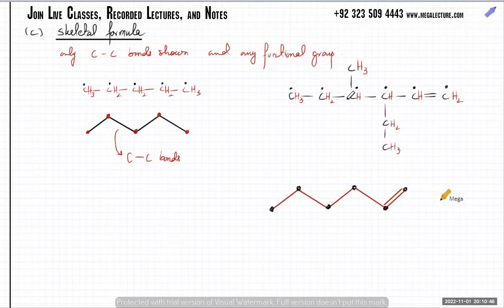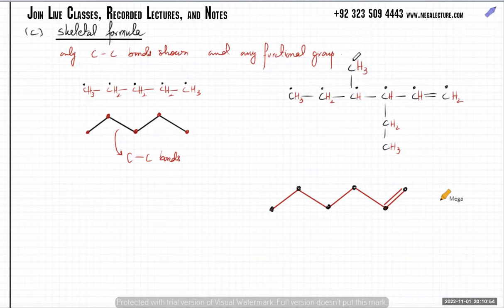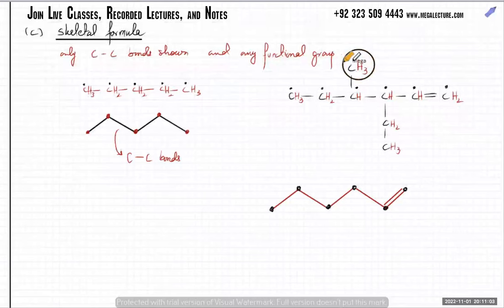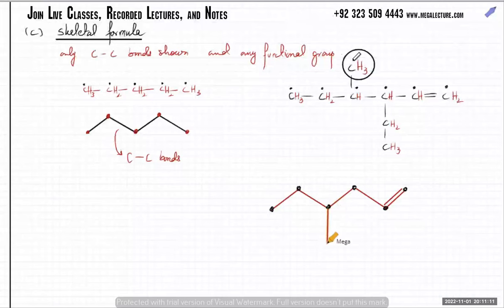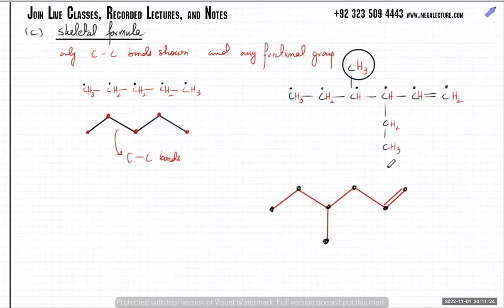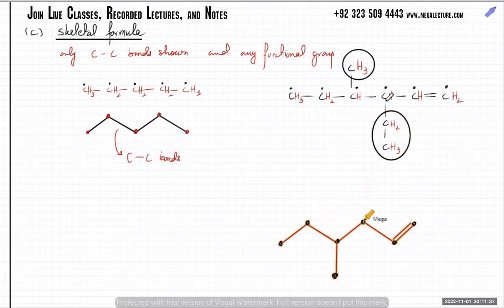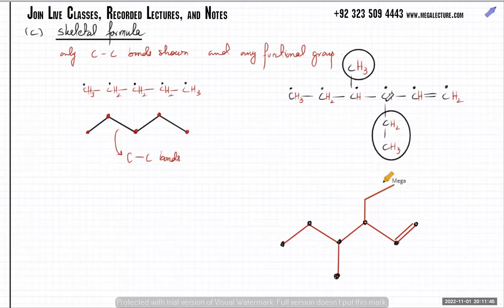On the third carbon atom there's a one-carbon-atom branch — that's my branch. Remember, it doesn't matter whether the bond is going upwards or downwards; it's the same thing. On the fourth carbon atom, there's a two-carbon-atom branch — two carbon atoms coming out of the fourth one. My fourth one has two carbon atoms coming out of it: that's one and two. Is this clear?